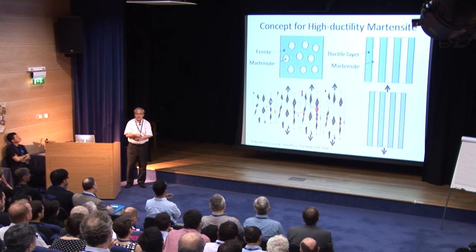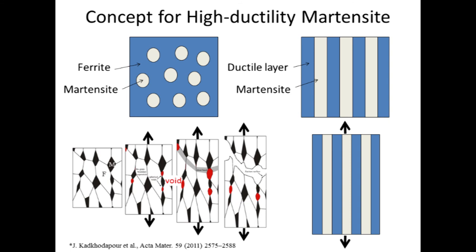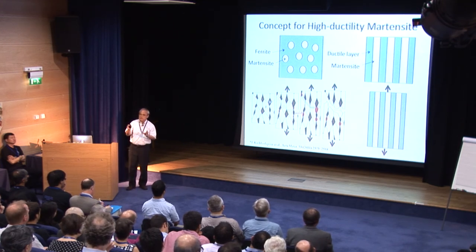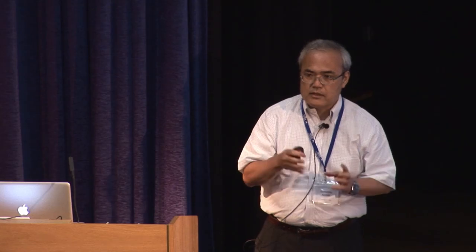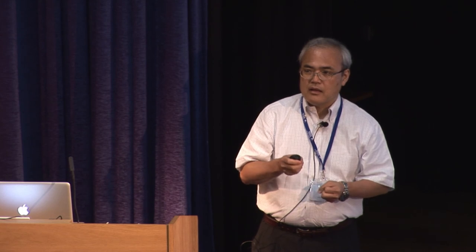Why the layer structure? To achieve high elongation, we need to elongate the as-quenched martensite. In dual-phase steels, martensite is not deformed because stress is not partitioned to it. There is stress concentration in the ferrite matrix, particularly between martensite islands, which results in voiding and eventually fracture. In a layered structure, stress is partitioned to both ductile layers and high-strength layers. With plastic constraint, the martensite should be elongated as long as local fracture is suppressed, which is not easy.